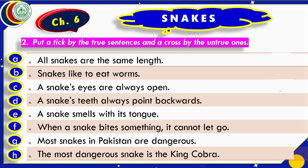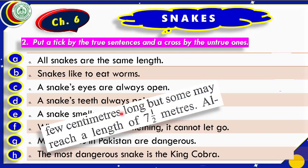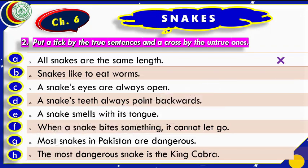After this we are going to start the second exercise. We are asked to put a tick by the true sentences and a cross by the untrue ones. Let us read the first sentence: 'All snakes are the same length.' Do they have the same length? No — some are a few centimeters long but some may reach a length of seven and a half meters. This statement is untrue — we shall put a cross.